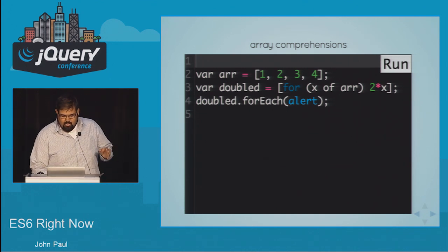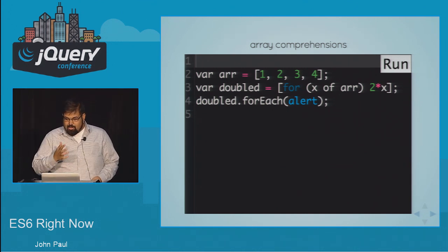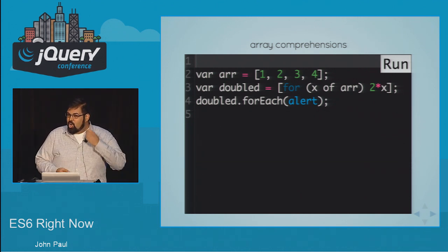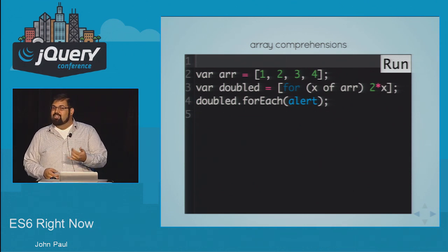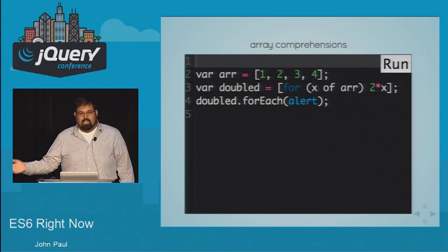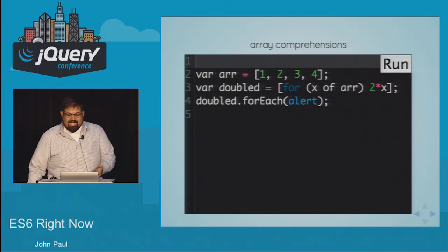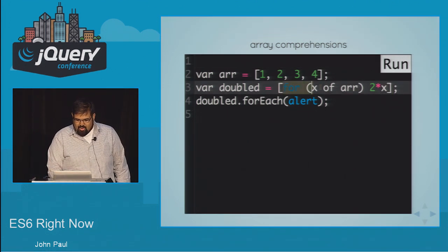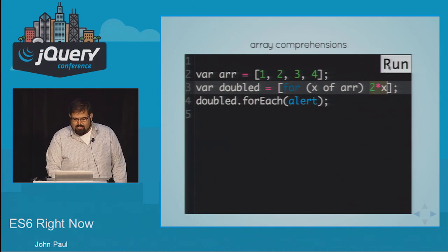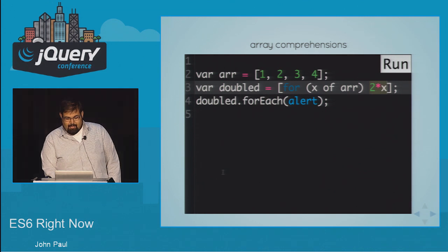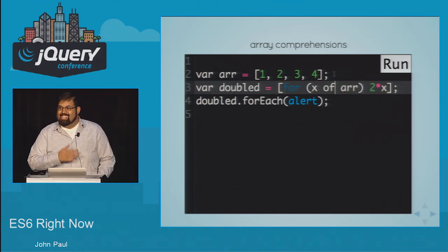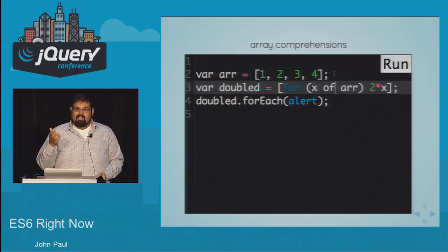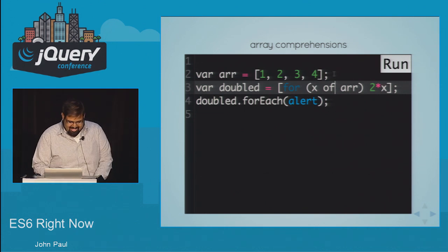Now I'll show you array comprehensions. Array comprehensions are just another one of those features — a really nice syntactic sugar over something we do fairly often. This is stolen basically from Python, which has list comprehensions that do something very similar. The order is backwards — it actually matches the order of the way C# does list comprehensions. Using this new syntax with the square bracket around 'for x of array', showing what you want to do on the right side, I get 2, 4, 6, and 8, because I'm doubling each value using this array comprehension.